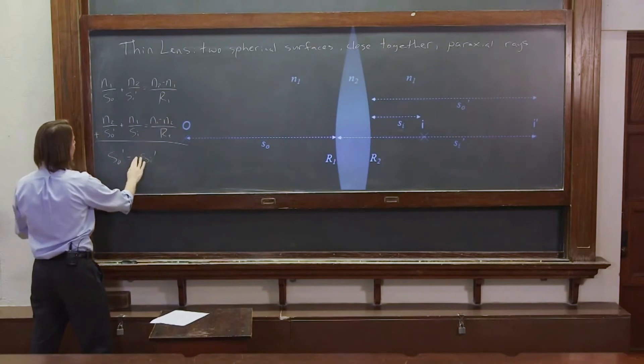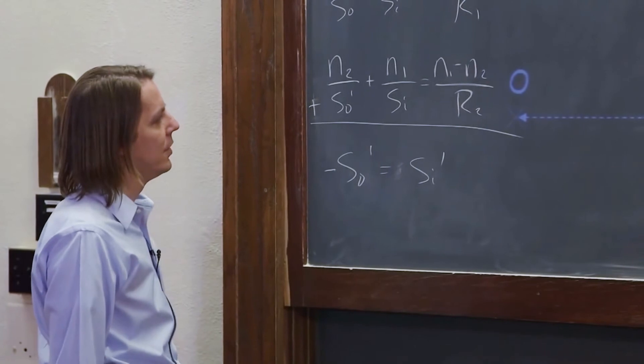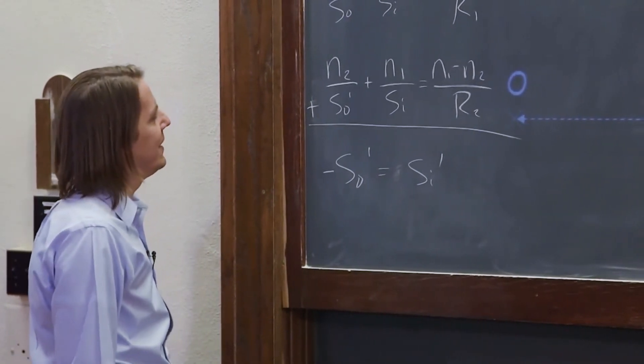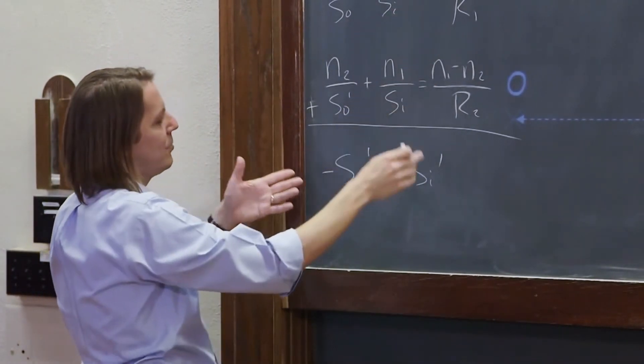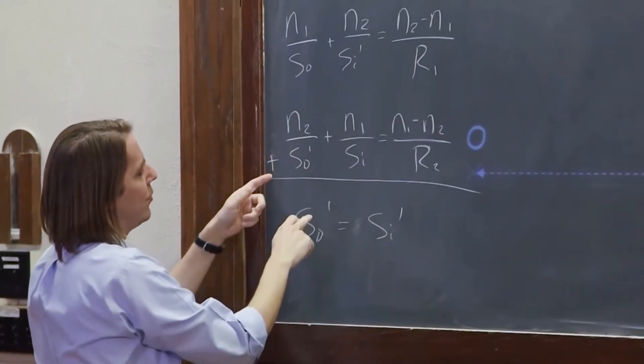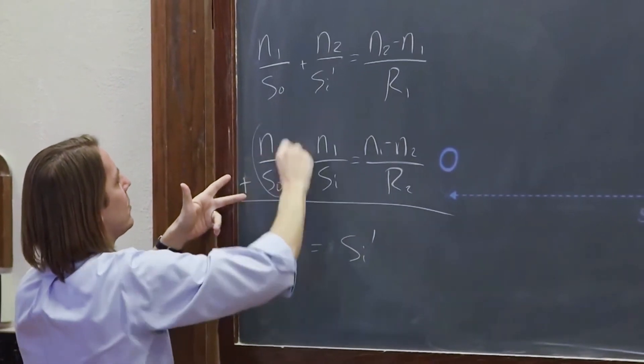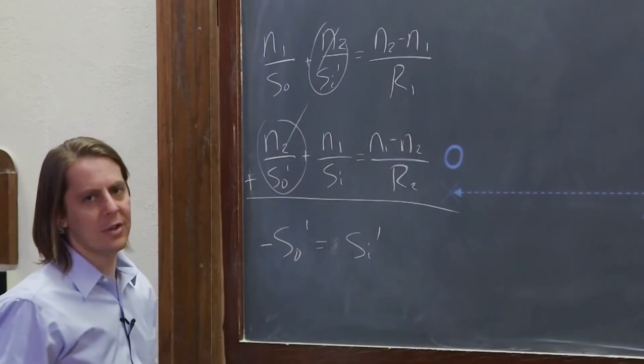So I could write this, I guess SI equals negative SO prime. The negative can go on either side. Doesn't matter. So if you do that and you add these two, then you can make the substitution here and you can say this equals N2 over negative SI prime and you can see that makes those two terms cancel. So these two terms are going to cancel when we add it together.